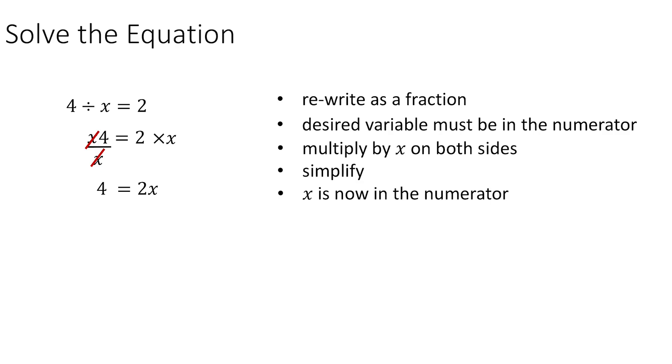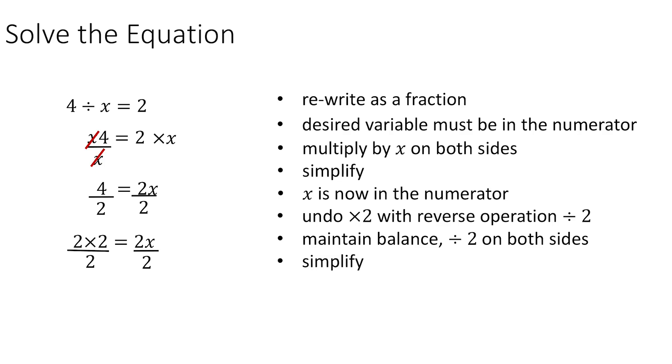And now it's the multiplication by 2 we want to get rid of, so now we divide by 2 on the right-hand side and automatically divide it by 2 on the left-hand side as well. Simplifying, on the right, you'll get 1 to go along with the x, and then on the left, you'll get 4 divided by 2 is 2.